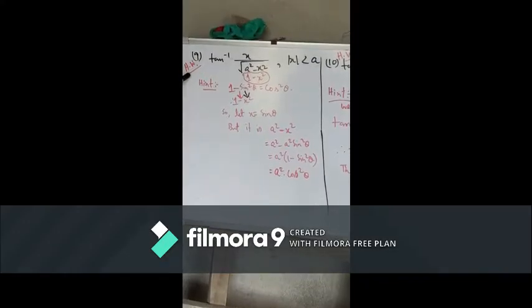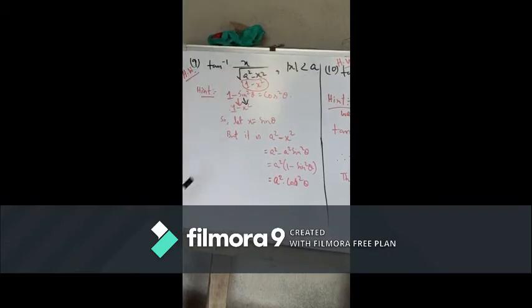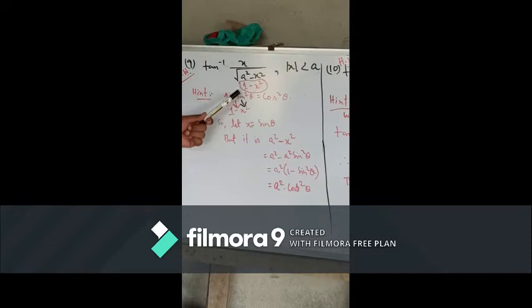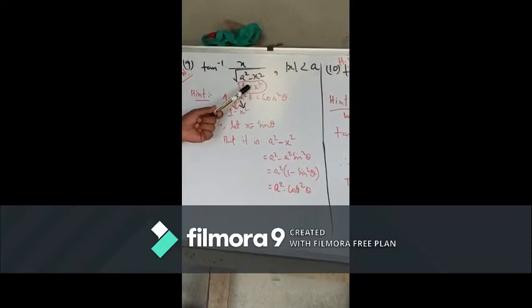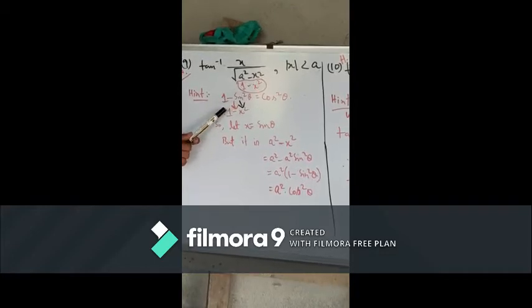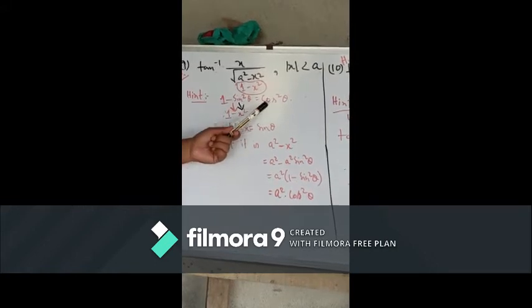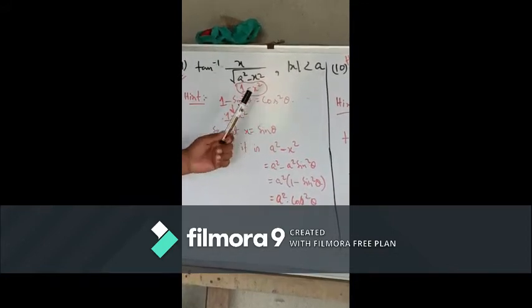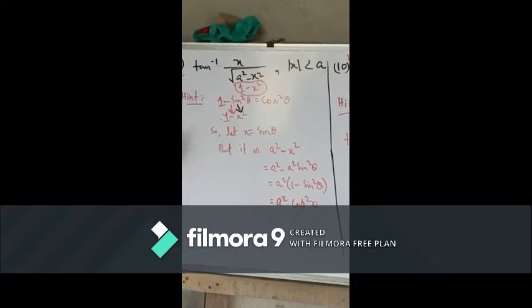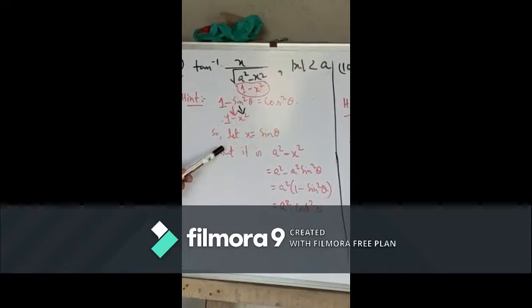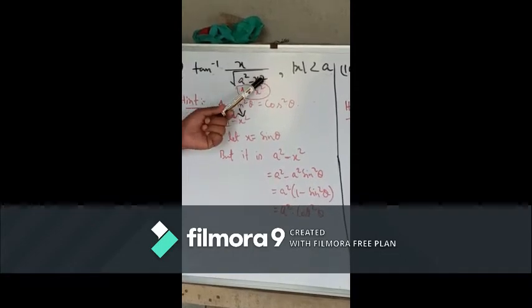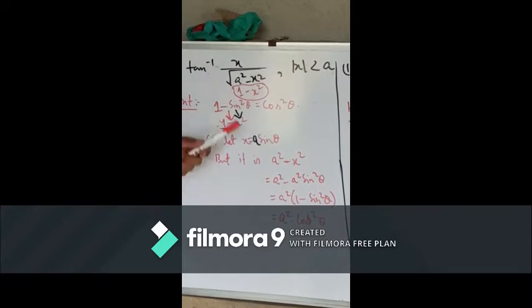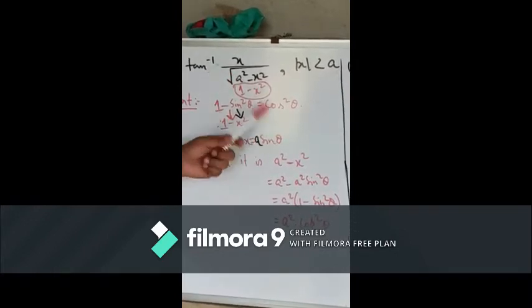Question number 9, I set this as homework for you. This is tan inverse of x by 2 divided by root of a squared minus x squared. I am giving a hint here. You see, it is a squared minus x squared, so we can think of it in terms of 1 minus x squared. If it is 1 minus sin squared theta, we know that equals cos squared theta. So for x, we can suppose x equals sin theta or x equals cos theta.